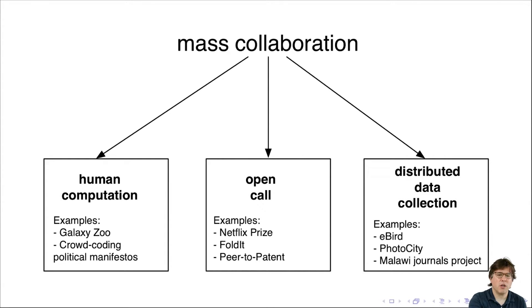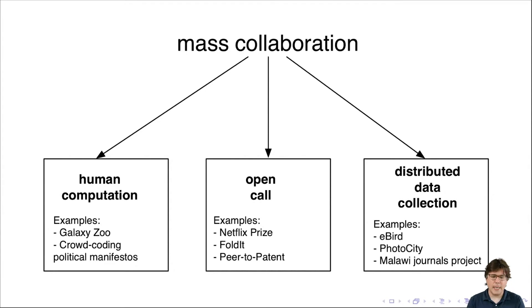The first is what I would call human computation projects. In these projects, a really big task is split up and distributed to lots of people doing relatively simple micro tasks, and then that work is combined to produce an overall answer or data set. Human computation projects are often projects that in the past you might have thought about giving to undergraduate research assistants.